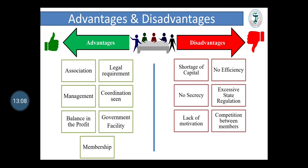Disadvantages. Shortage of capital: there is always a shortage of capital. No efficiency: the society is managed by the managing committee who generally lacks technical knowledge and experience. No secrecy as members are more. Excessive state regulations affect the working of the society. Lack of motivation: because the rate of return to the member is limited by law, and there is competition between members due to differences in opinion.